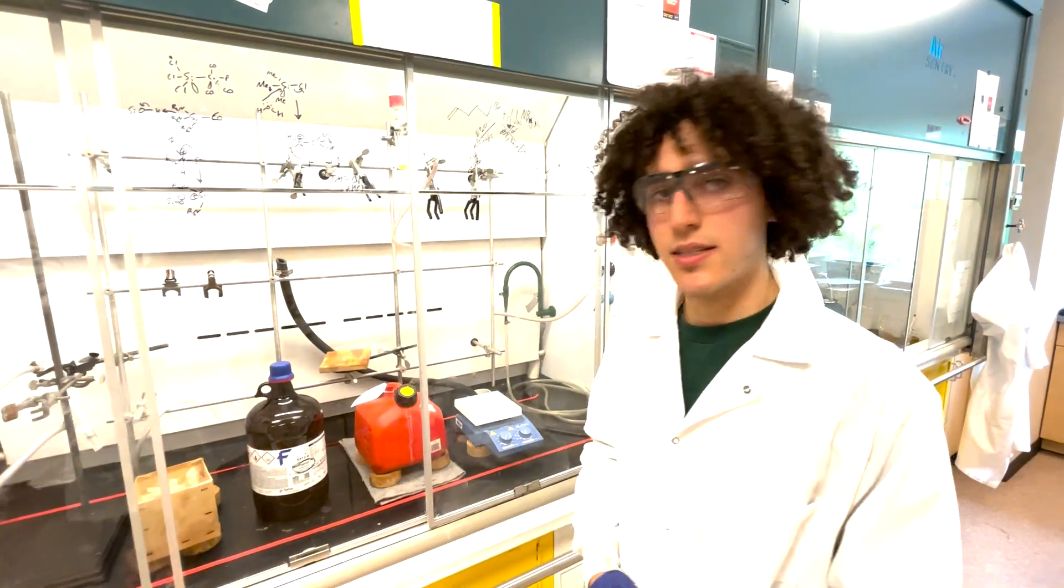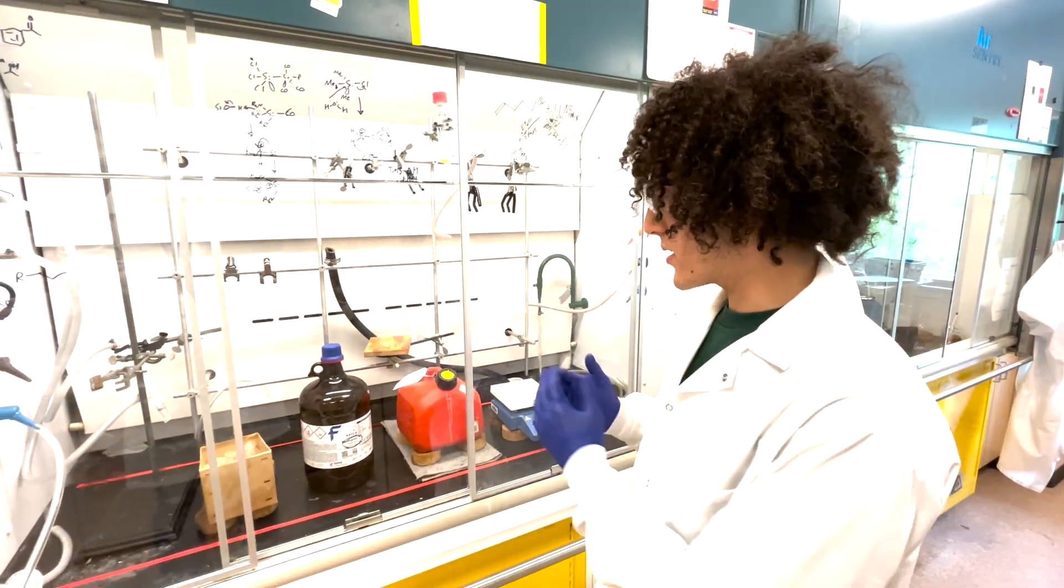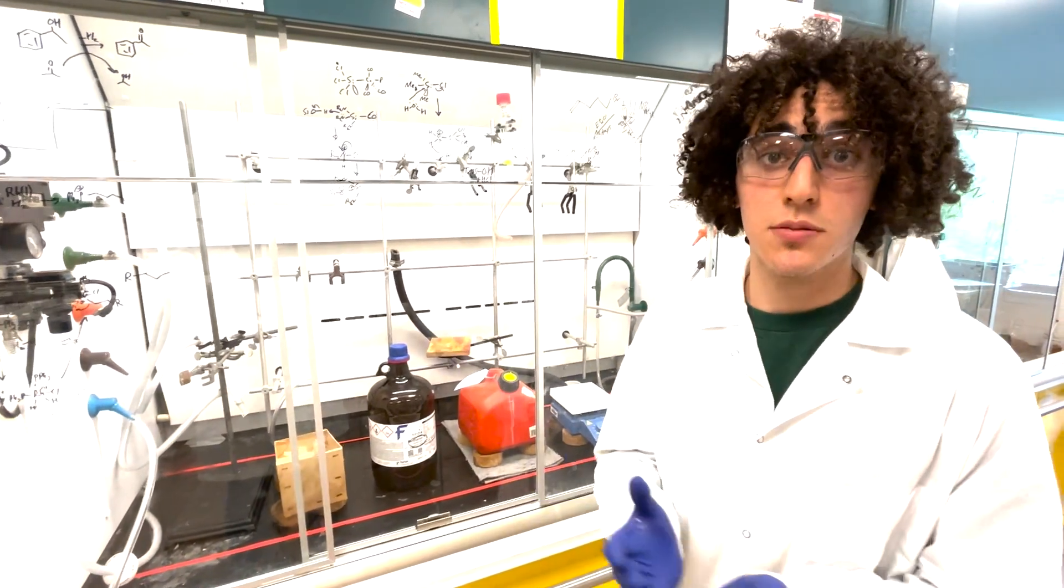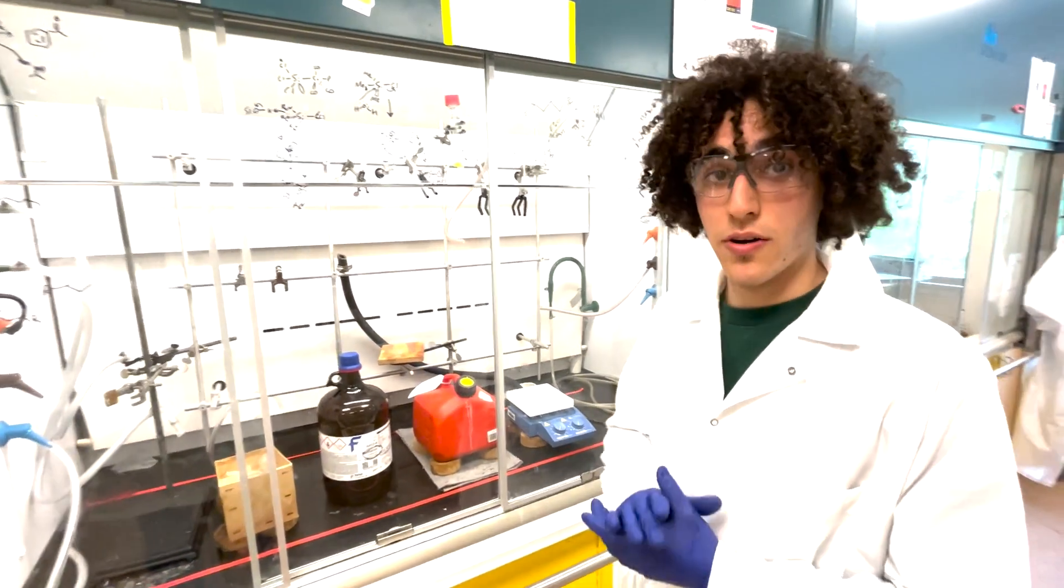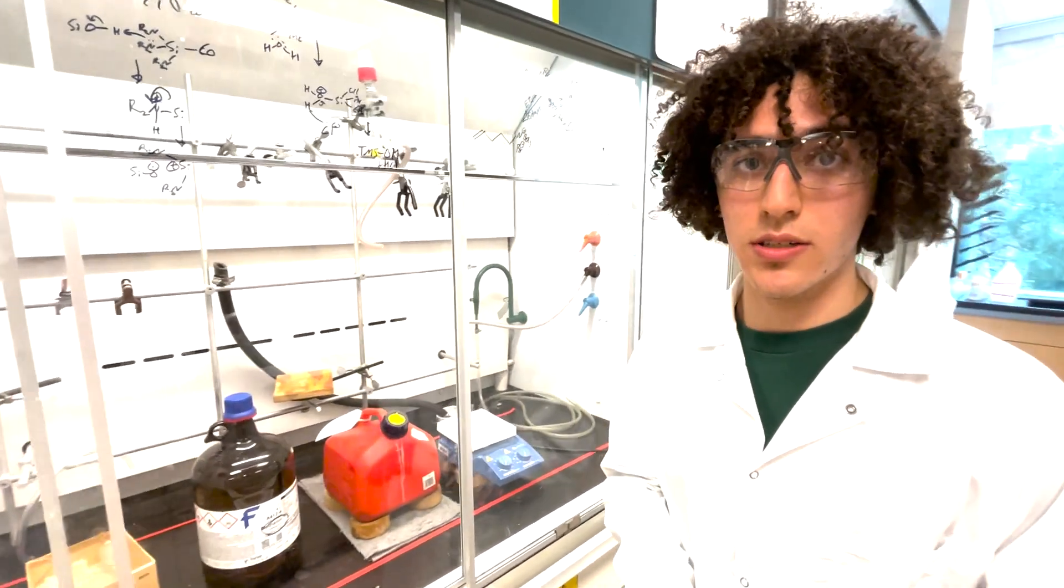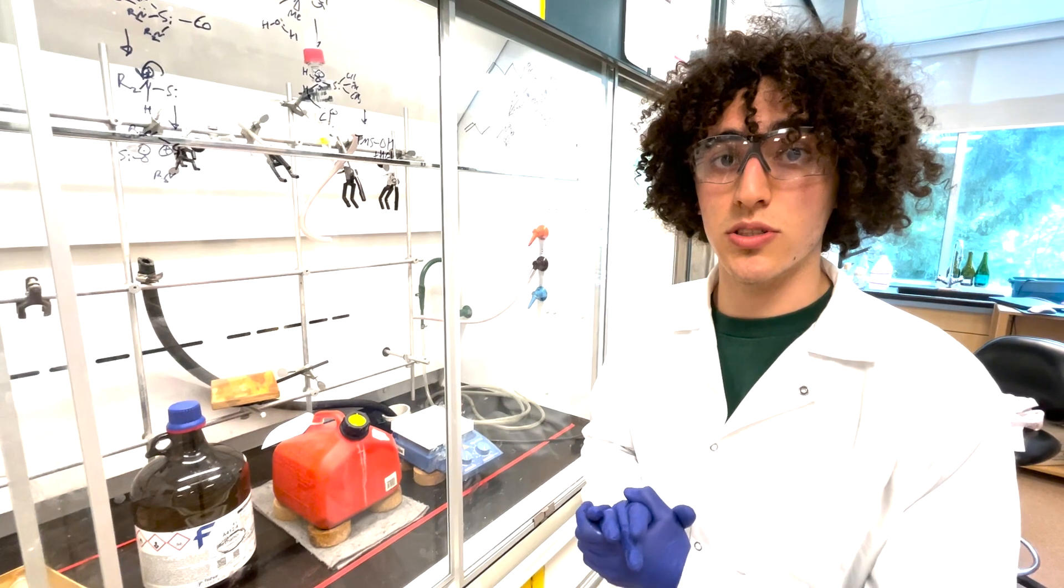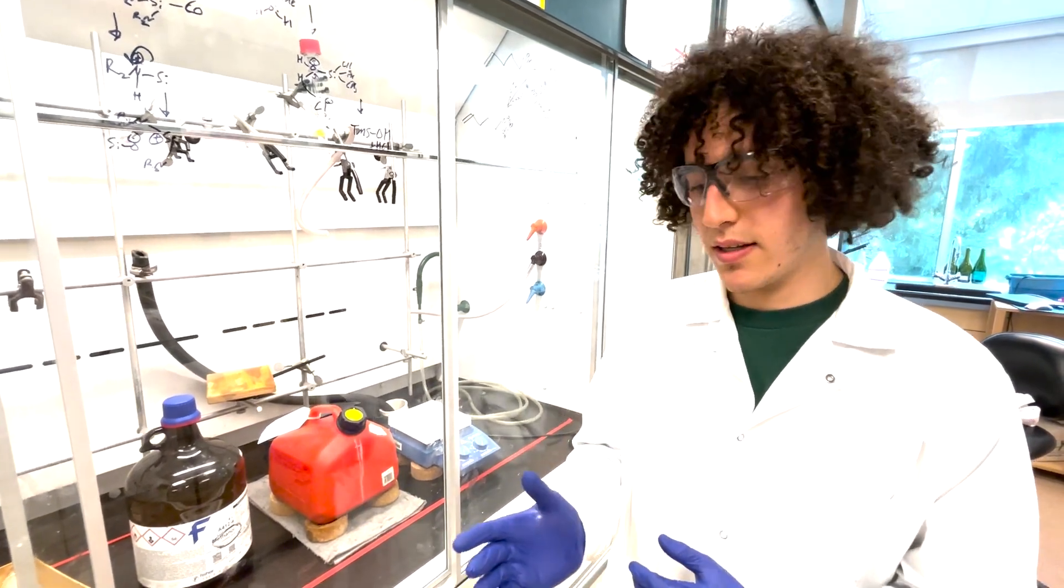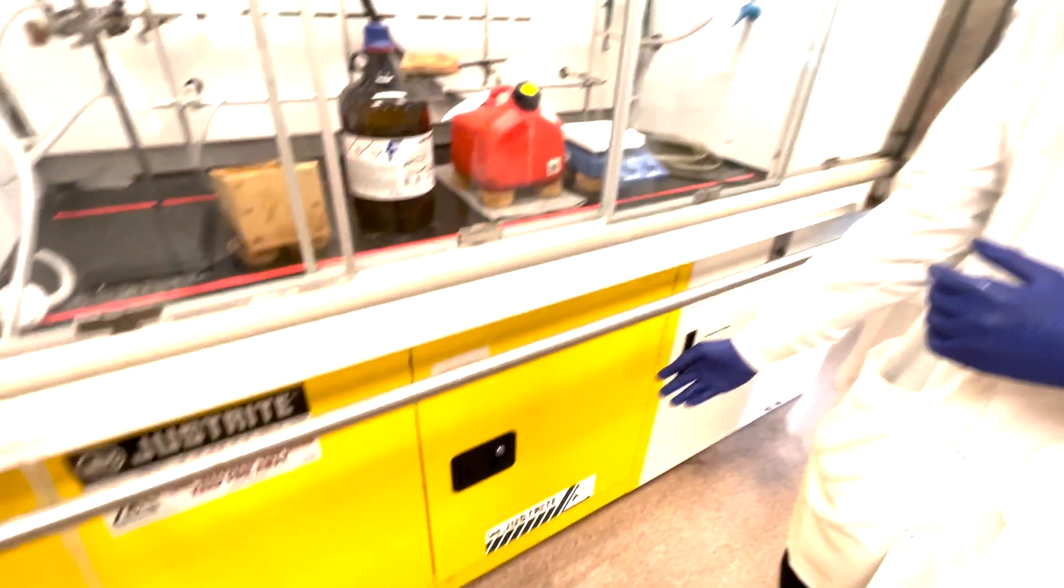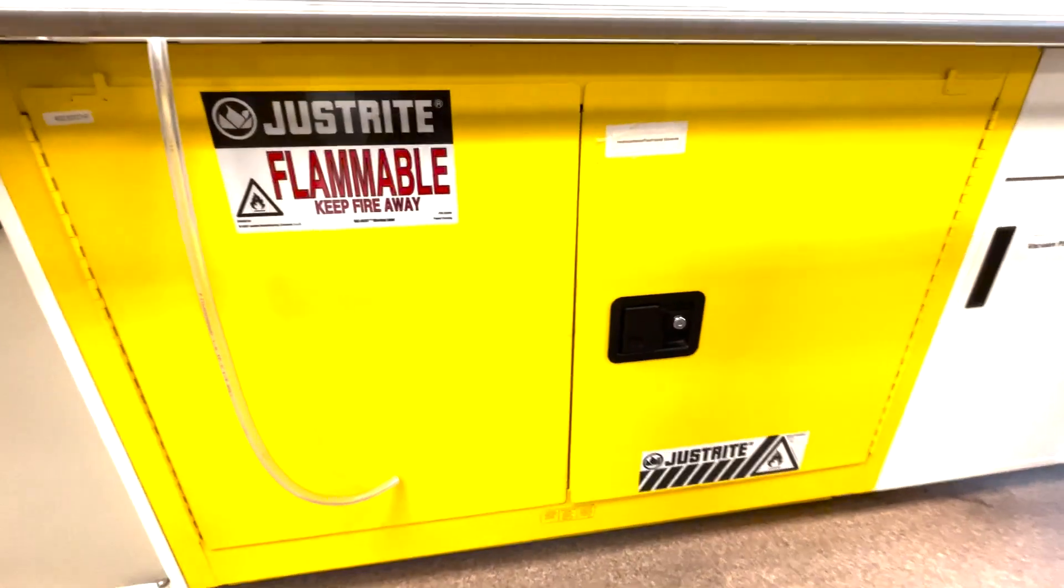Fume hoods are intended for researchers to conduct experiments in a protected environment so that vapors do not spill over the edge. They are not intended for chemical storage. It is inappropriate to use a fume hood for long-term chemical storage and instead safety cabinets such as the ones below a fume hood are appropriate.